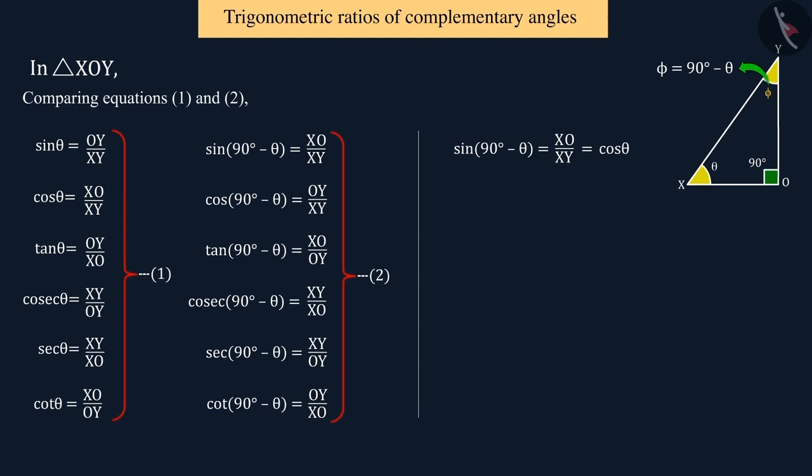If you notice, you will see that the value of cos 90 degrees minus theta is equal to sine theta. Similarly, tan 90 degrees minus theta is equal to cot theta.